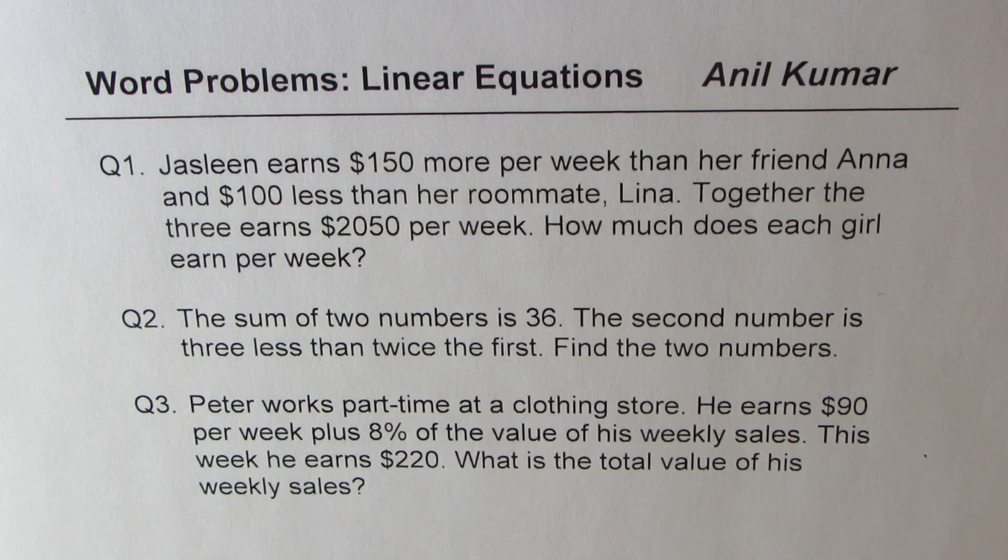Question number two: The sum of two numbers is 36. The second number is three less than twice the first. Find the two numbers.